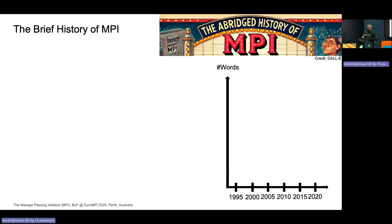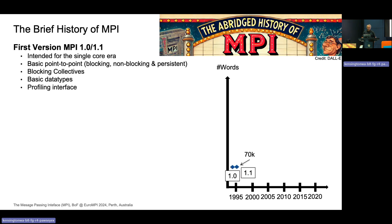Looking at the history of MPI, the initial MPI was done in 1994, very much intended for the single-core era — one MPI process on one node, with single-core chips connected via network. We had basic communications: point-to-point was the main thing, already with non-blocking and persistent versions in the initial standard, plus simple blocking collectives and basic data types. And already a tools interface back then — MPI had a tools interface from the very beginning, which gave it very good tool support from the start.